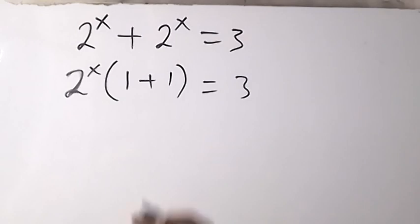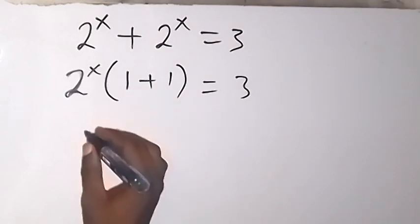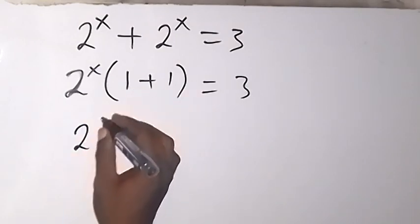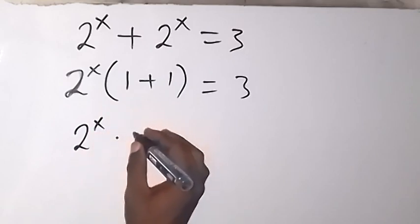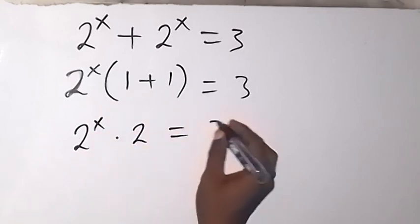Then from there, 1 plus 1 will give us 2. So we have 2 raised to power x times 2 now equals 3.